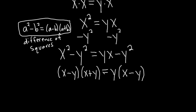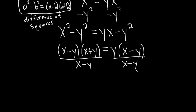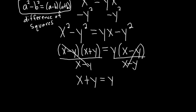Now you'll notice that we have x minus y on both sides. So the natural thing to do is divide both sides by x minus y — and we're allowed to divide both sides by a number. So those cancel and we're left with x plus y equals y.